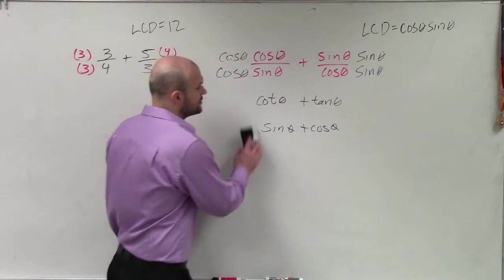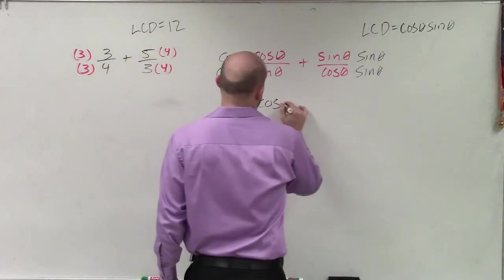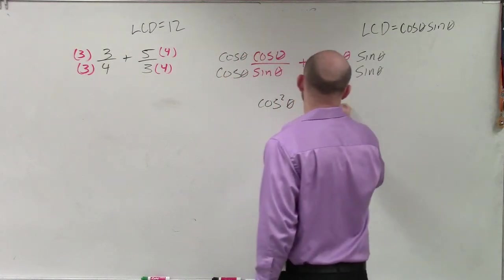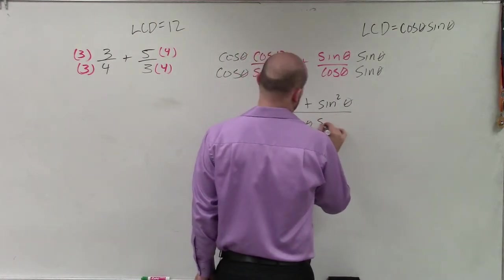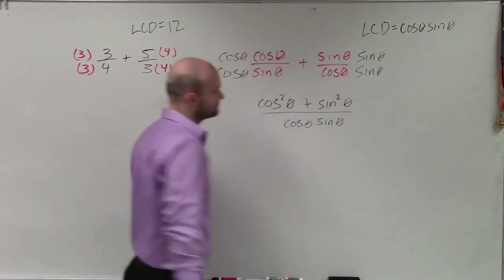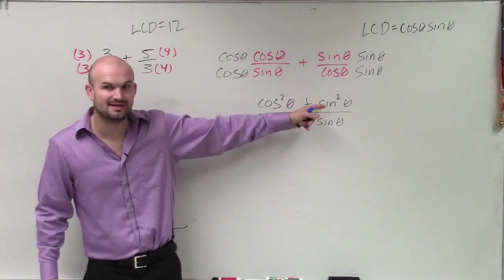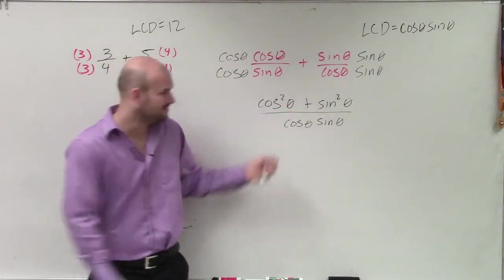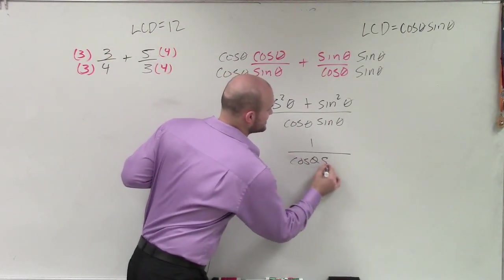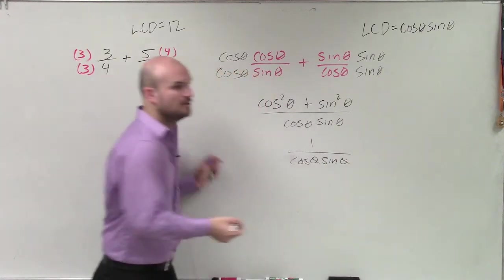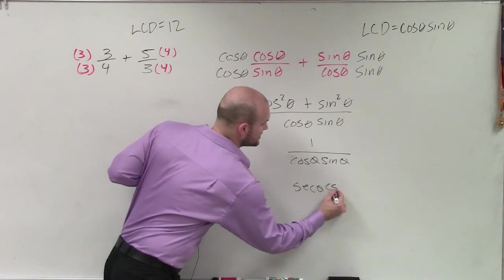So by multiplying this, I now have cosine squared of theta plus sine squared of theta divided by cosine of theta sine of theta. And cosine squared of theta plus sine squared of theta is going to equal 1. So now I have 1 over cosine of theta times sine of theta, which now I can just rewrite that as secant of theta times cosecant of theta.